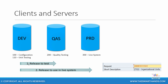Once the transport request is released, it can be moved to different clients. For example, you can move it to a quality testing client, create more master data and transaction data for further testing, and if you are happy, move it to your production environment which is your live system. You can then start migrating your master data and transaction data and go live. This will be mostly performed by your basis administrators or system administrators.